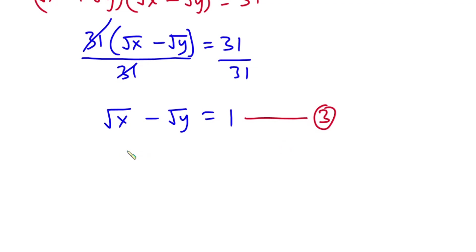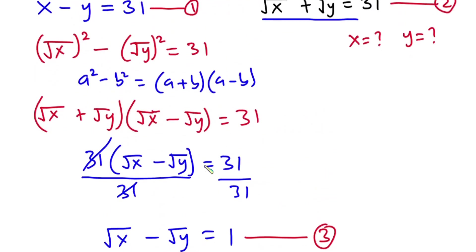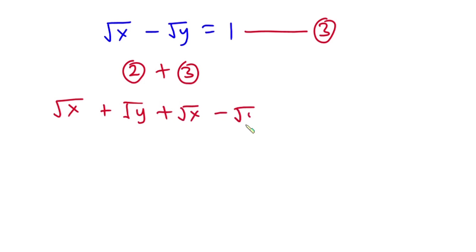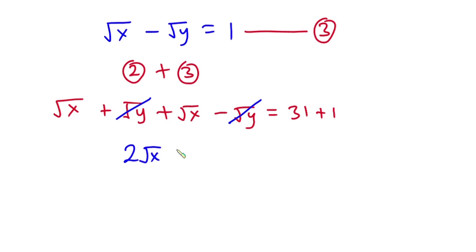From this point, I will add equation 2 plus equation 3. Equation 2 is square root of x plus square root of y, and equation 3 is square root of x minus square root of y, and this is equal to 31 plus 1. The positive square root of y cancels the negative square root of y, so we have square root of x plus square root of x, which is 2 square root of x, and this is equal to 32.